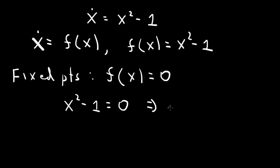We get two fixed points. So we have one fixed point is x star equal to 1, and the other fixed point is x star equal to minus 1.